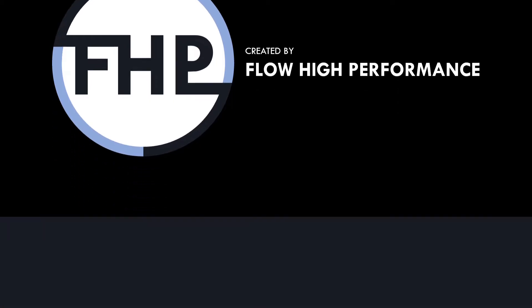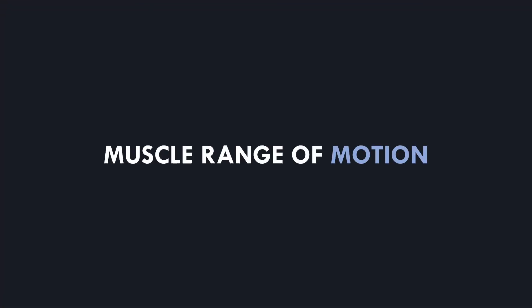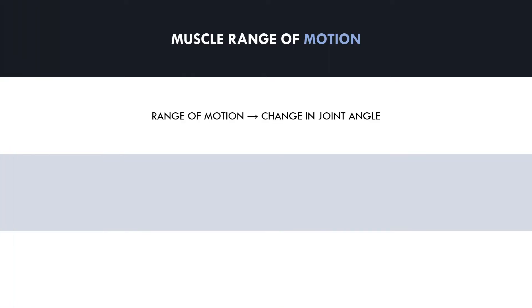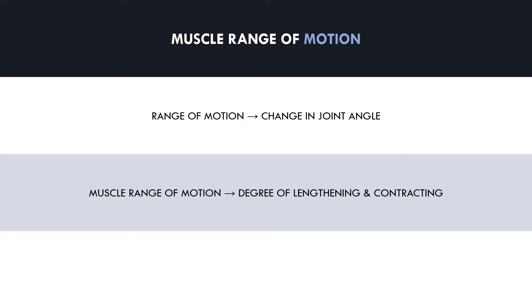First and foremost, we need to explore exactly what muscle range of motion is. Range of motion in a general sense refers to how much the joint angle changes during an exercise. However, for hypertrophy training, we aren't really concerned with joint angles — we are more concerned with range of motion of the muscle. Muscle range of motion specifically refers to how much a given muscle lengthens and contracts during an exercise. This is specific to each muscle we are trying to train.